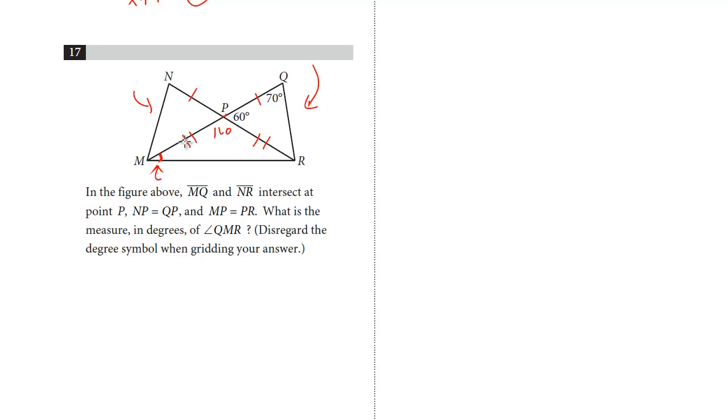So this on the bottom, because these two lines are equal, that means this is an isosceles triangle, this triangle on the bottom. So it's an isosceles triangle, that means both of these angles have to be equal.